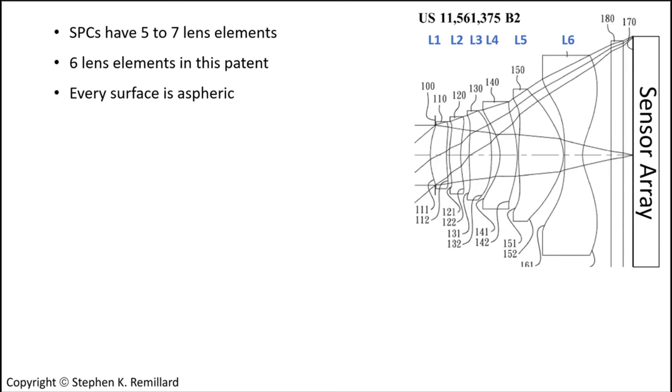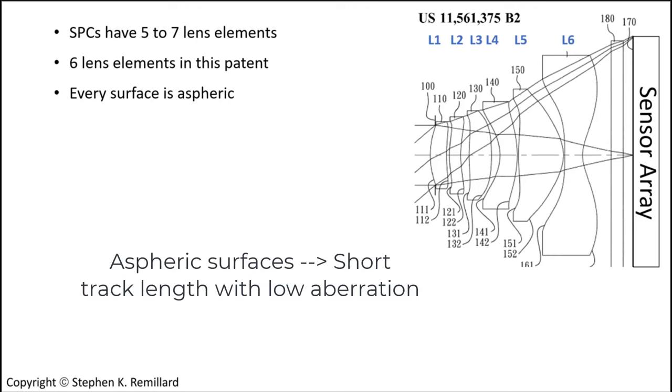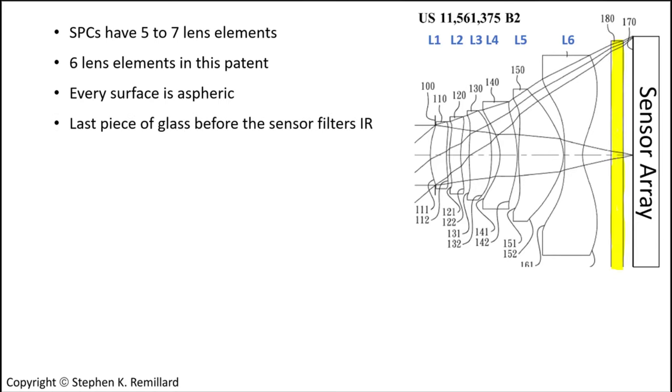Every surface in the six-element lens patent is aspheric, which is a design feature of all mobile phone lenses. The aspheric surfaces are essential to achieve the short track lengths without introducing unacceptable wavefront error. Behind the six lens elements, there's a flat piece of glass which naturally filters out the infrared that the CMOS sensor array is sensitive to. The aperture stop is at the front surface. It could be positioned behind the first lens to better control odd aberrations, especially distortion.